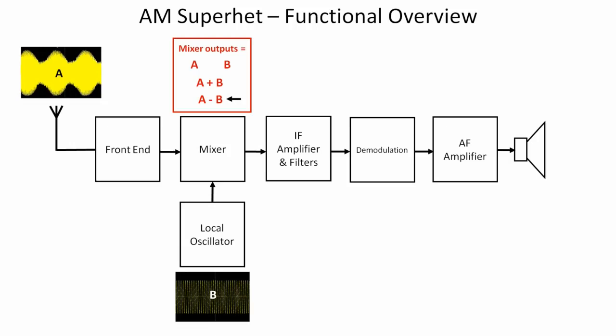Now A minus B in this example is going to be the one that we want and as long as we link the front end tuning and the local oscillator tuning with a gang capacitor which we'll look at in detail in a few minutes that means the local oscillator will track the tuned signal and A minus B will always be at the same frequency but the modulation will be unchanged. So what comes out will be at a different frequency but it will still have the same amplitude modulation A minus B in this case.